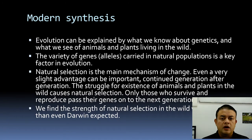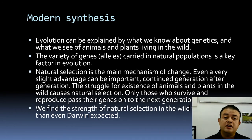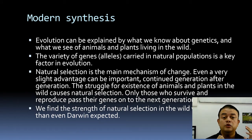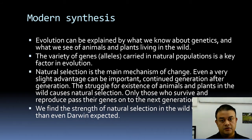Evolution can be explained by combining what we know about genetics with what we observe in animals and plants living in the wild. Darwin contributed the latter while Mendel contributed genetics — yet both were contemporaries who never met or read each other's work. The variety of genes and alleles carried in natural populations is a key factor in evolution. Variation is the raw material for natural selection; that variation is produced by mutations, as explained by Mendelian genetics.